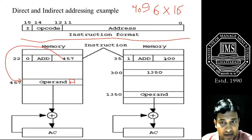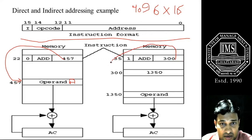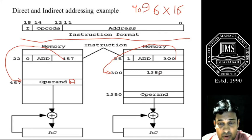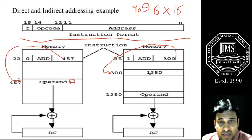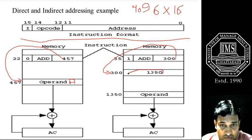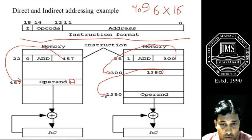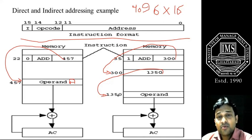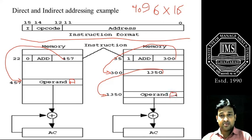With respect to indirect addressing — repeating for clarity — when we go to memory slot 300, we do not find the operand there. The operand is not present at 300. What is present there? That memory slot holds the address of another slot. So we move further from the value 1350 to memory slot 1350, and at that memory slot we get our operand, which is again A.